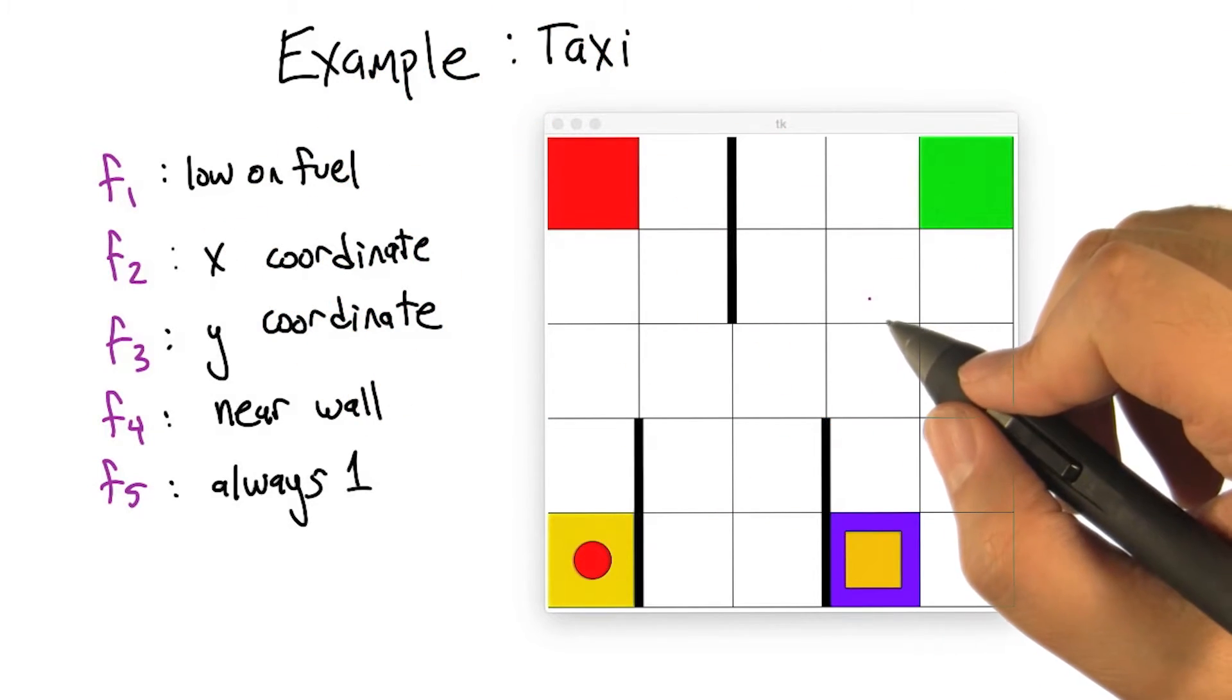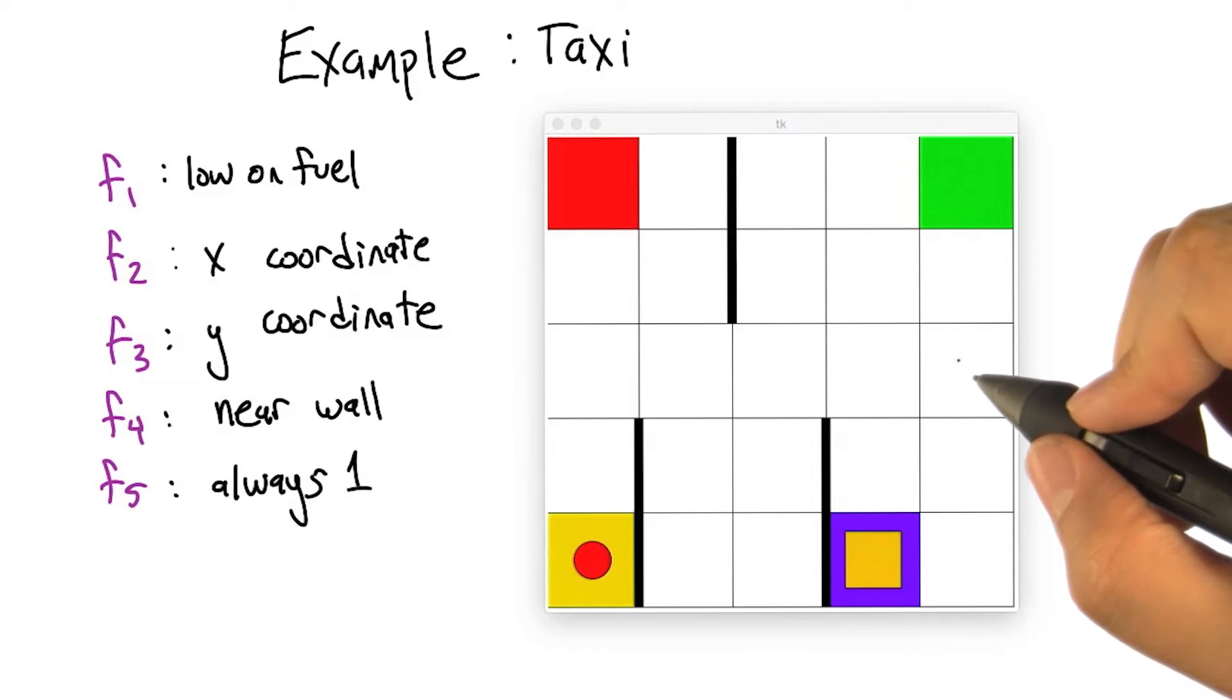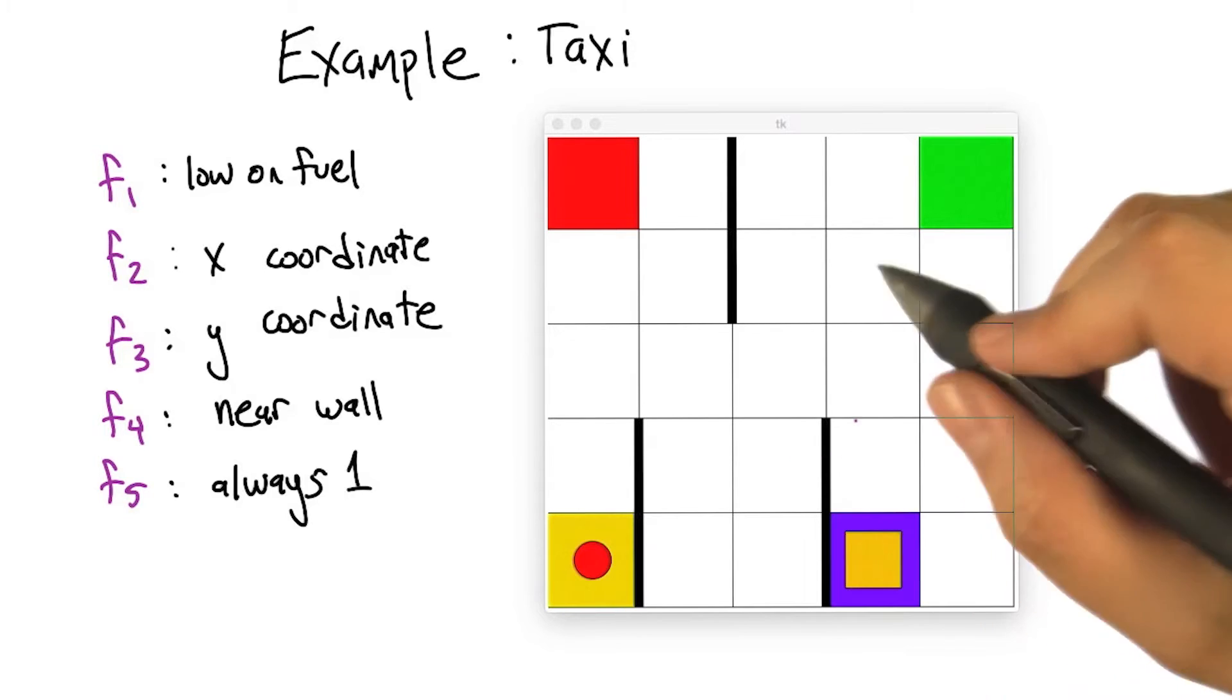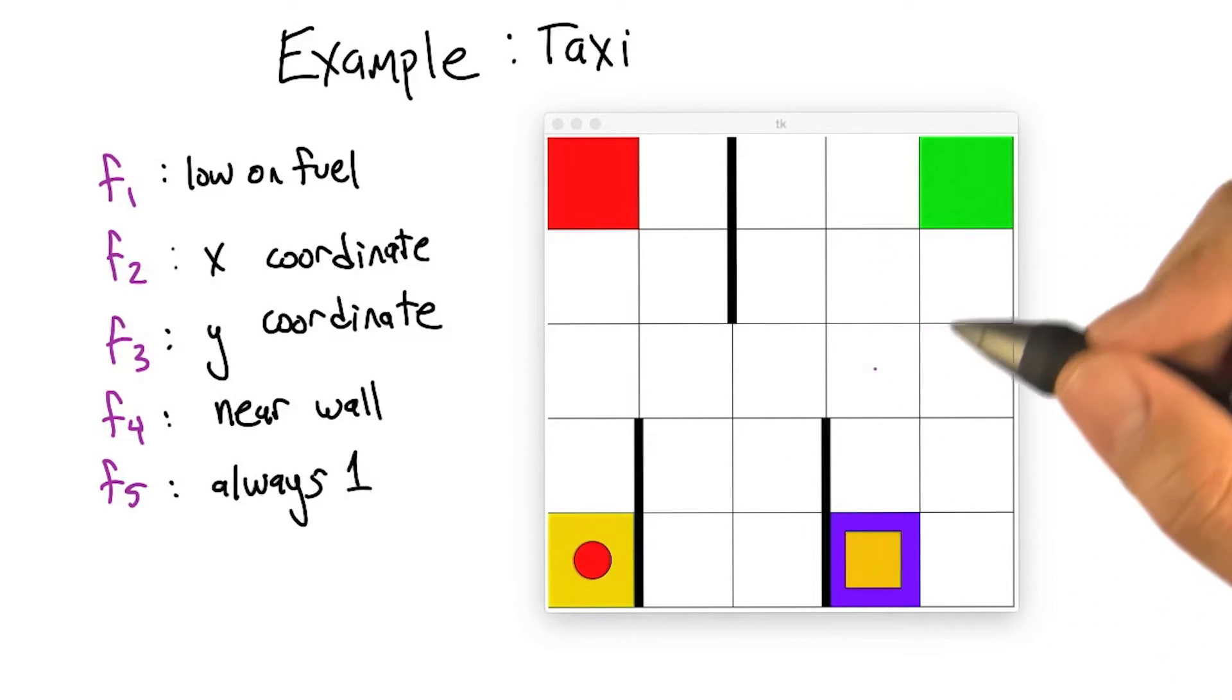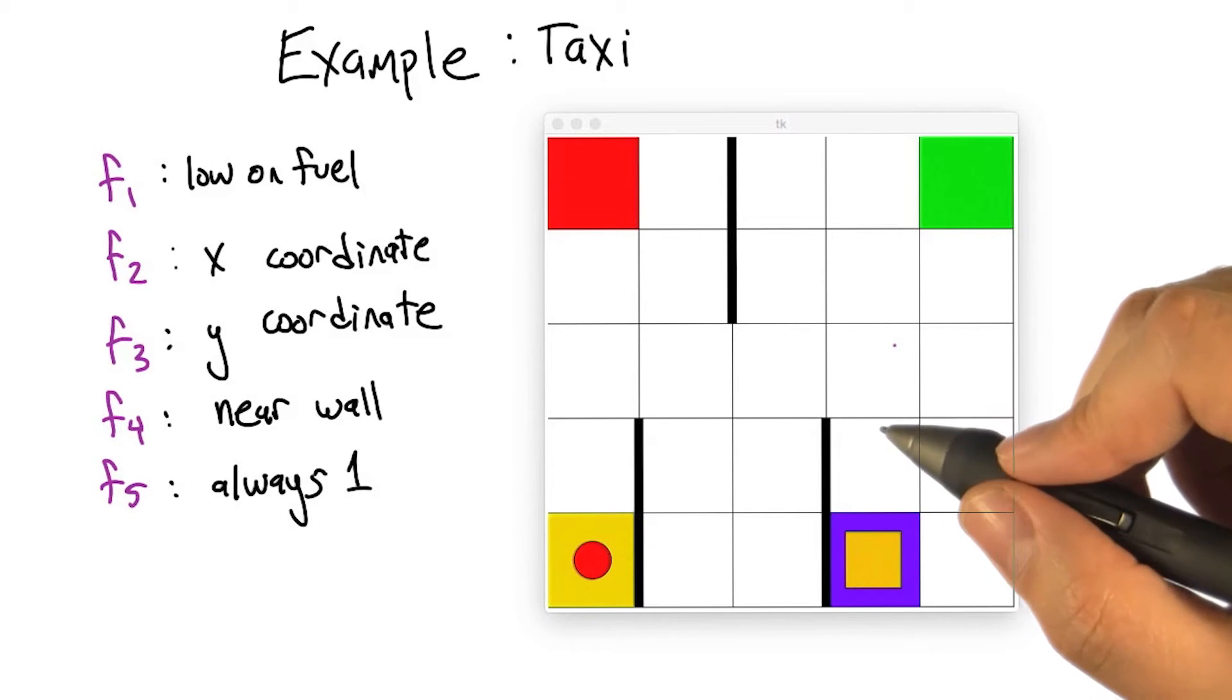Here's a concrete example to make this make some sense. Do you remember our taxi problem that we talked about before? How could I forget? In this particular environment, there was something like 500 states. And in standard Q-learning type approaches, we would just think of all those different states as being completely different from one another.